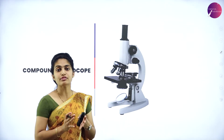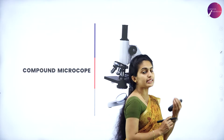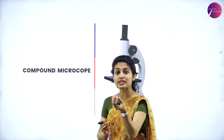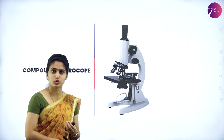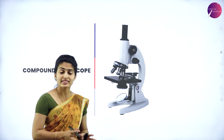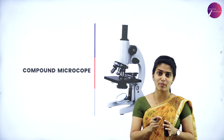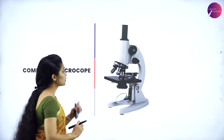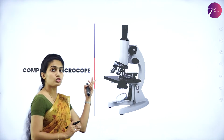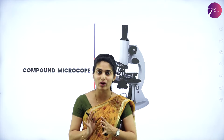Now let us move to the compound microscope. The compound microscope is the instrument used in biology laboratories. It is used to magnify very, very tiny particles — much smaller than what a simple microscope can resolve. The compound microscope gives an inverted image of the object.